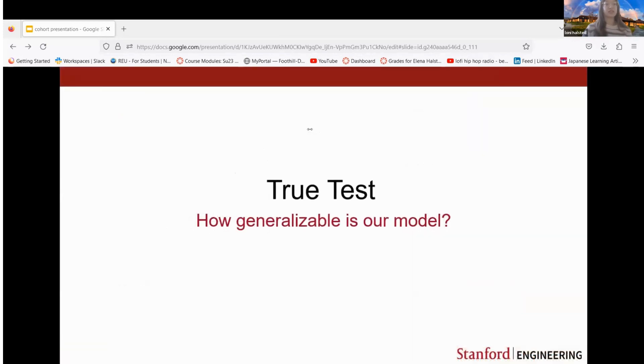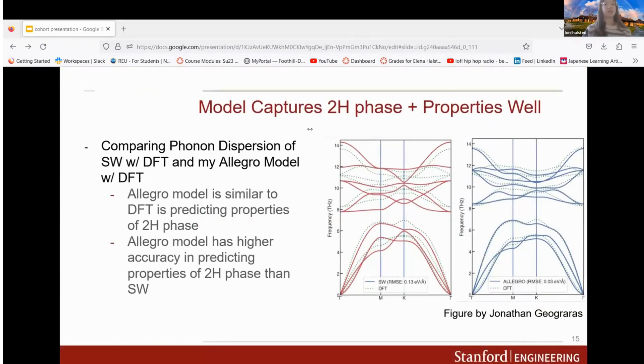In our true test we wanted to see how well the model captures the 2H phase which we based our model on. Comparing the phonon dispersion of Stillinger-Weber with DFT shown in red and green, and then my model with DFT in blue and green, we see that my model has an RMSE of 0.03 and Stillinger-Weber has an RMSE of 0.13. This shows that the model is similar to DFT in predicting the 2H phase but has higher accuracy than Stillinger-Weber, which is what we wanted initially.